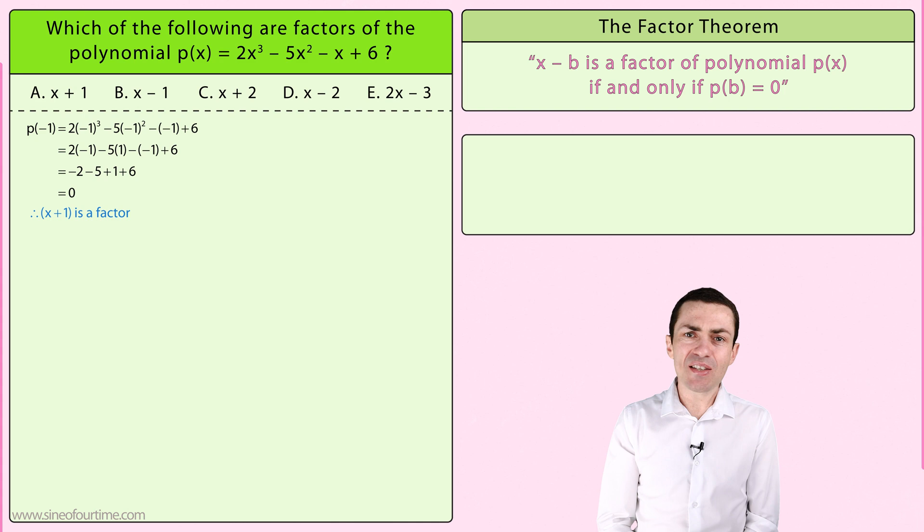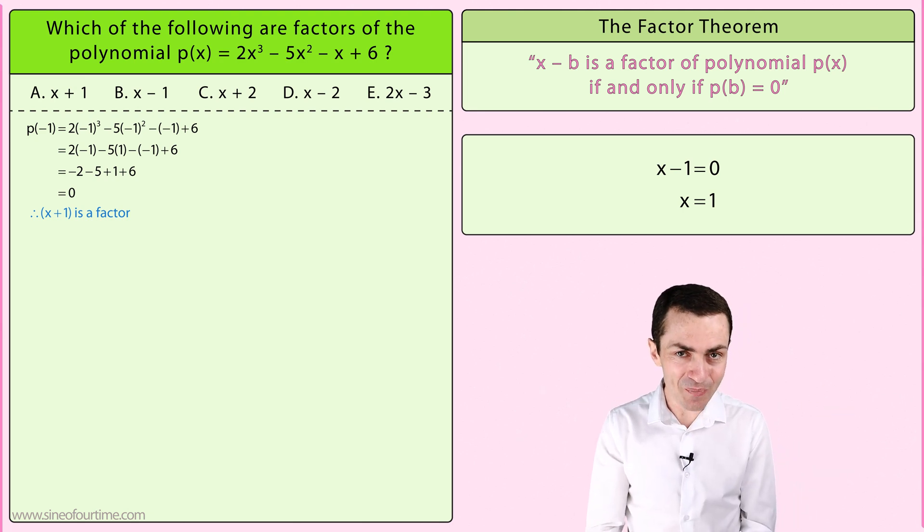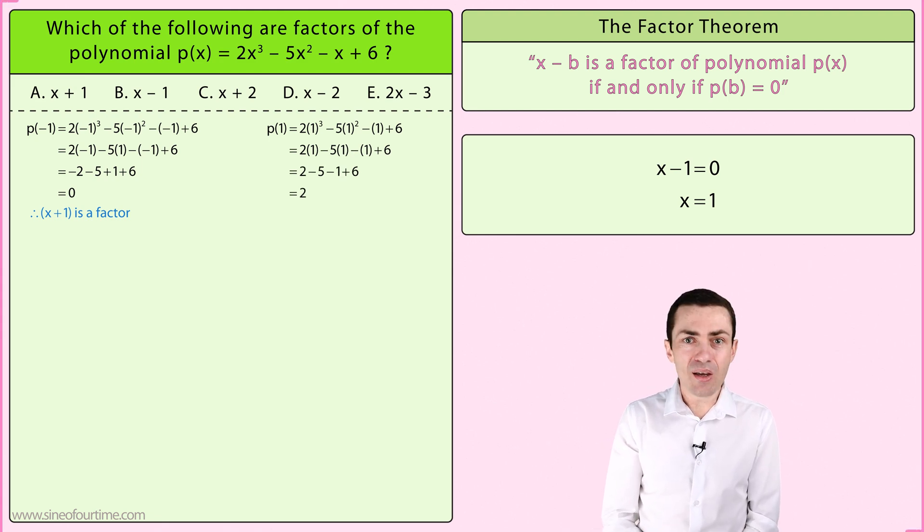So we substitute positive 1 in place of x in the polynomial. When we simplify we get positive 2, which tells us that x minus 1 is not a factor of the polynomial.